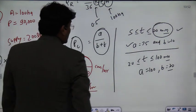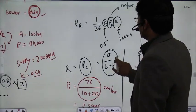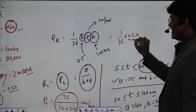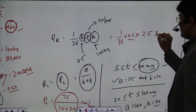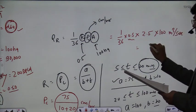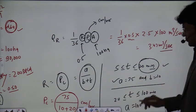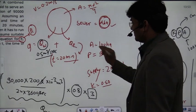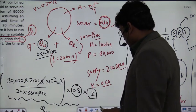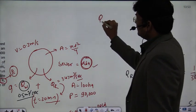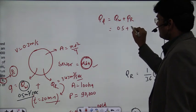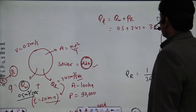Pc is 2.5 cm/hr. Now using the rational formula: QR = (1/36) × 0.5 × 2.5 × 100, which gives 3.47 m³/s. So because of rainfall the discharge is 3.47 m³/s. The total design discharge is QW plus QR: 0.5 + 3.47 = 3.97 m³/s. Since the wastewater was already multiplied by the design factor of 3 earlier, no additional factor is needed here.